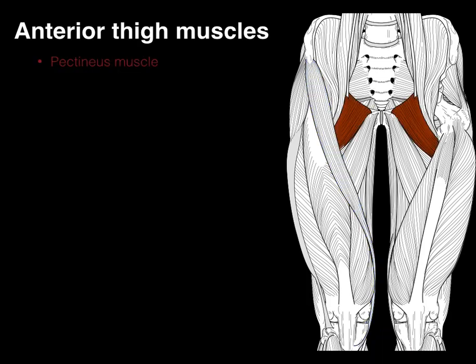The pectineus arises from the pectineal line of the pubis and goes to the pectineal line of the femur. Unless surgeons discuss it during their lectures, the focus won't be on the pectineus, but it's included because it's part of this muscle group and is innervated by the femoral nerve.